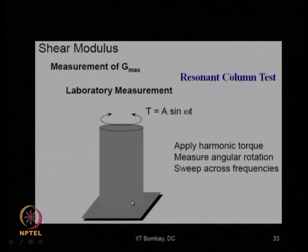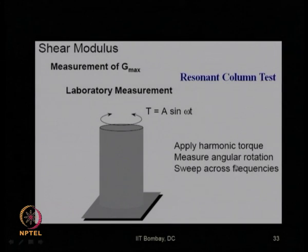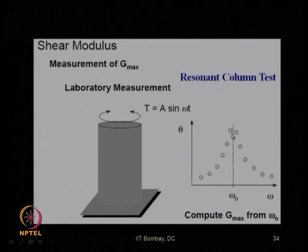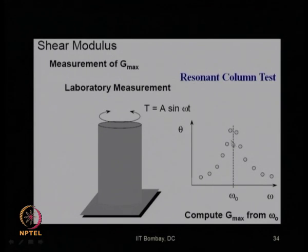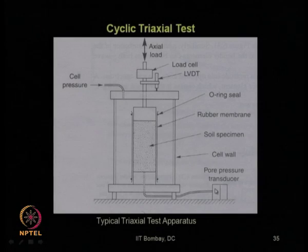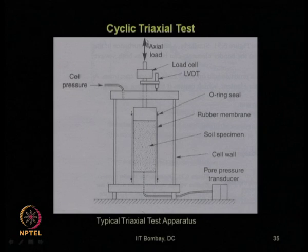In the resonant column test, the soil column is subjected to torsion and a harmonic torque is applied while measuring angular rotation across various frequencies. From the angular distortion vs. frequency data, the resonant condition (maximum theta at omega_0) is identified, and G_max is computed from this resonant frequency. In the cyclic triaxial test, G_max can be found by providing axial deviatoric load.